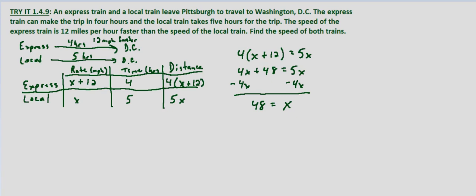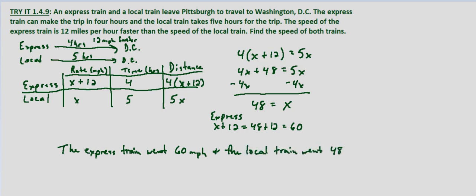So for the express train we want x plus 12. Again this is for the express train. x plus 12 equals 48 plus 12 which equals 60. So the express train went 60 miles per hour and the local train went 48 miles per hour.